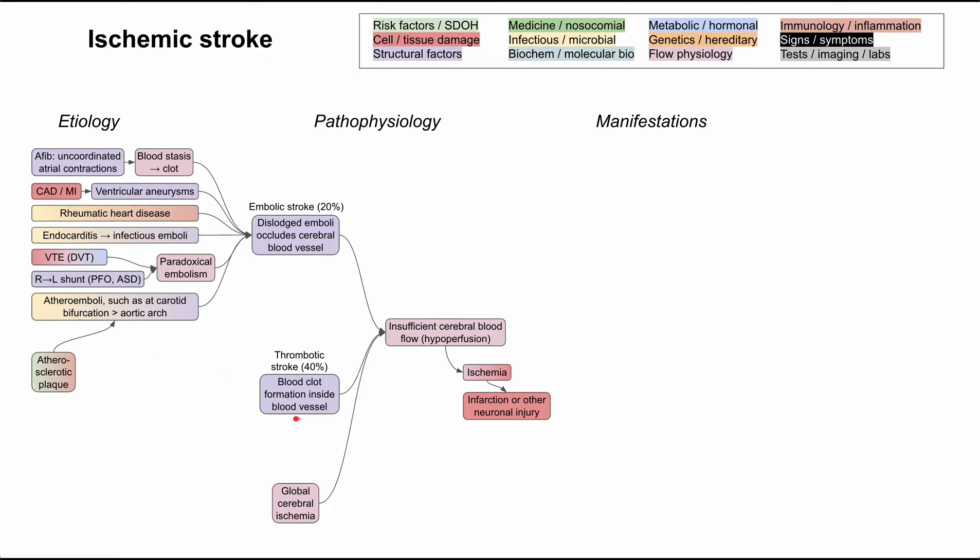Next, let's talk about the thrombotic stroke. We said this was 40% of all ischemic stroke. That 40% can further be broken down into these atherosclerotic plaques and then also the lipohyalinosis process that occurs in the lacunar strokes.